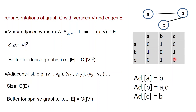A different way to represent graphs is via adjacency lists — you simply list all the edges of the graph. The size of this representation is order of the number of edges, so it is better if the graph is sparse, meaning the number of edges is linear or close to the number of nodes. In our example, we list the neighbors of A, which is just B; then neighbors of B, which is A and C; then neighbors of C, which is just B.